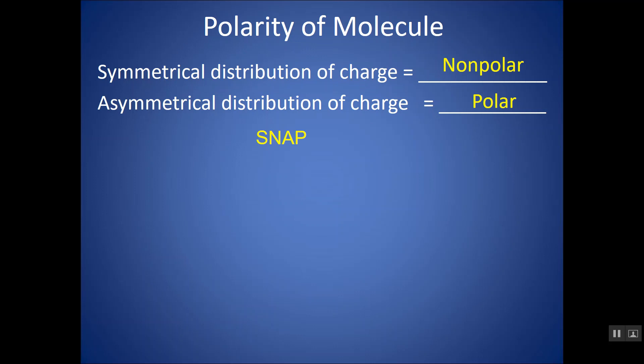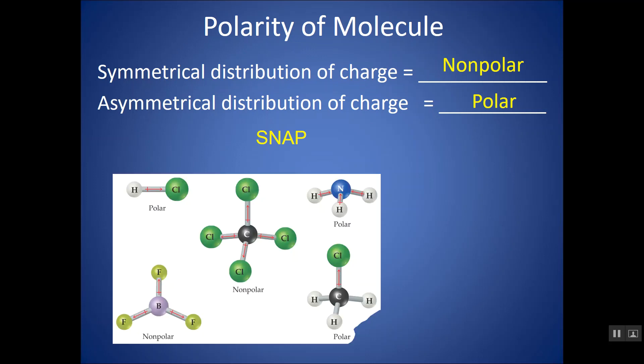A way to memorize that is SNAP: Symmetrical is Non-polar, Asymmetrical is Polar. We're going to have to look at the 3D shape, the molecular geometry, to figure this out. Molecules are going to be polar essentially when the geometry can't cancel out any bond polarities.